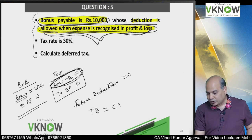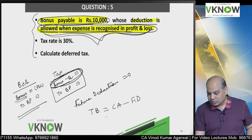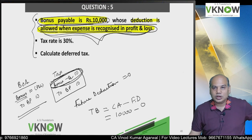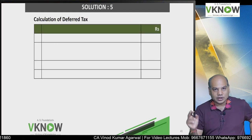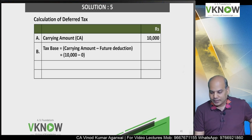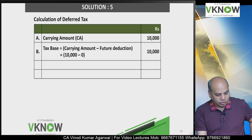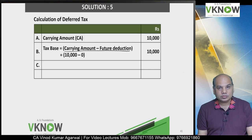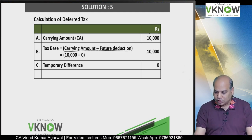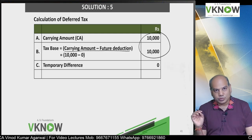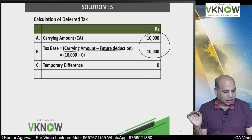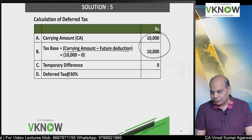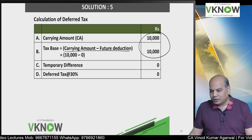So what is my tax base? Carrying amount minus future deduction: future deduction allowed is 0 — it's already allowed. Now you will not get deduction in future. Tax base is 10,000. Those who want to write carrying amount minus future deduction: 10,000 minus 0 equals 10,000. Temporary difference is 0 because both are equal. Temporary difference means future deduction in case of liability, and in future you won't be allowed deduction — you've already been allowed deduction in the same year. So there is no deferred tax. Deferred tax equals 0.